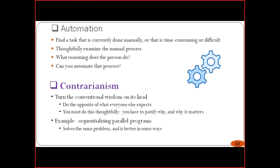The next part is automation — find a task that is currently done manually, that is time consuming or difficult. Manual calculations or work may not be possible, so we must go for automation. A couple of years back, due to unavailability of software and hardware, research methods were not that updated. But continuously, due to upgradations in the research domain, automation software definitely helps make research work much easier. Thoroughly examine the manual process — are there possibilities of errors? These can be minimized by going for automation.